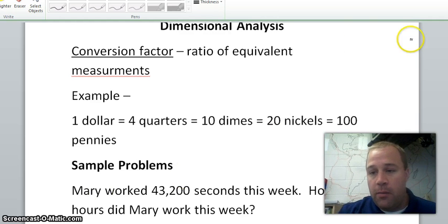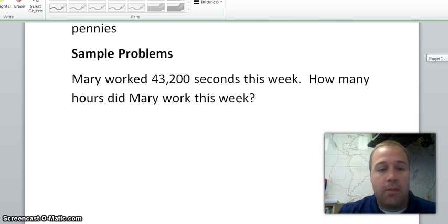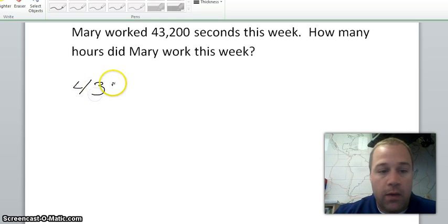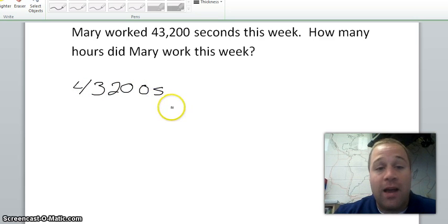Our first example is Mary worked forty three thousand two hundred seconds this week. How many hours did Mary work this week? The first thing you're always going to want to do with these is write down what's given to you. So we have forty three thousand two hundred seconds. On your test that's going to be worth one point, just writing down what's given to you. We always follow the same process here, times and a line.